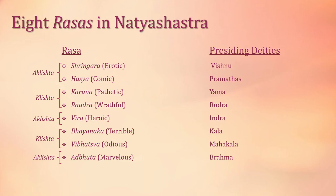First is Shringar or erotic rasa. This rasa includes love, fraternity and union between men and women — there may be a happy ending or separation, known as Yoga Shringar or Viyoga Shringar. Its ruling deity is Lord Vishnu. Why Lord Vishnu? Because in Indian theology the love between Radha and Krishna is considered the eternal symbol of love and eternal longing. So Lord Vishnu rules this rasa as Krishna was the embodiment of him.